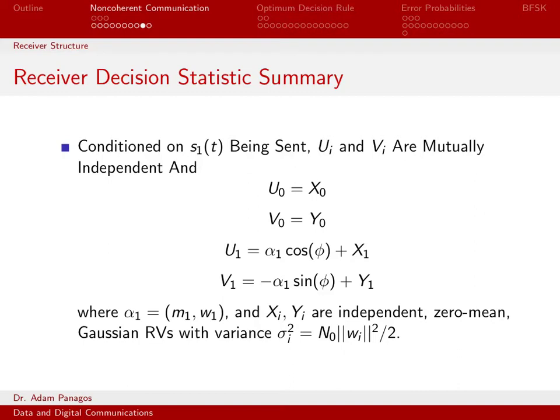Here is a summary of the decision statistics on the condition that s1 of t was sent. We didn't do any of the details in these charts, but you can see how it's going to work out. It should be somewhat intuitive. When I'm sending s1 of t, the top two branches should just have noise output. There should be no deterministic part, and that's what we see.